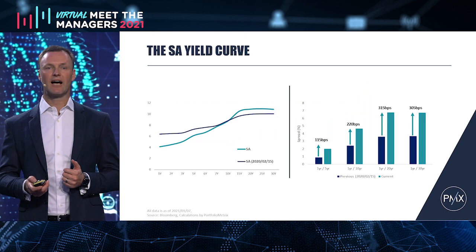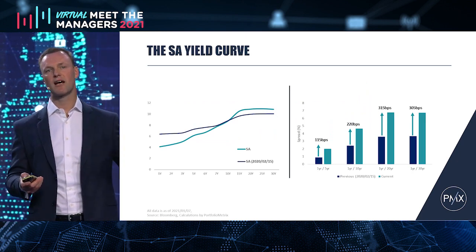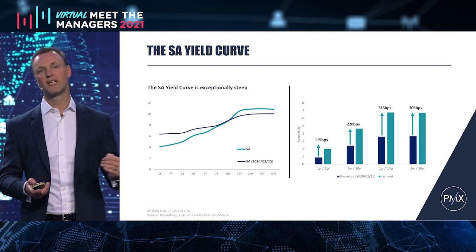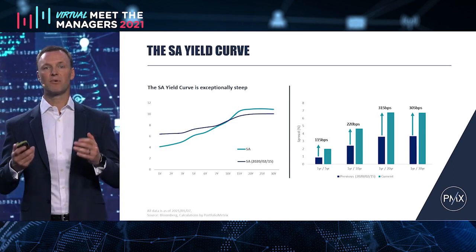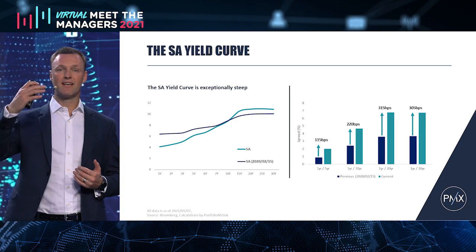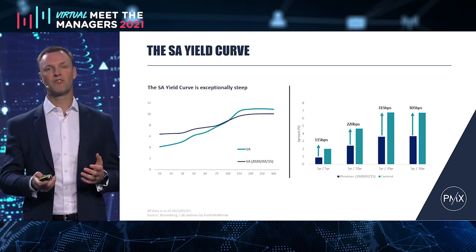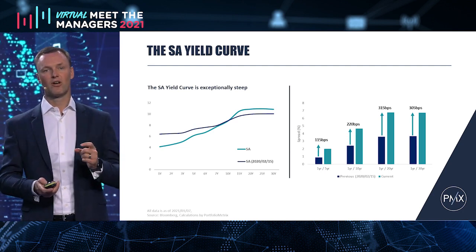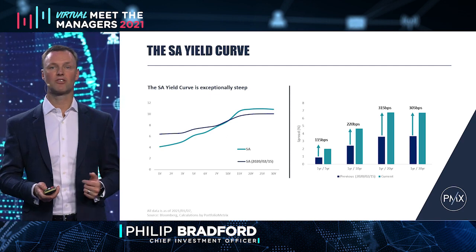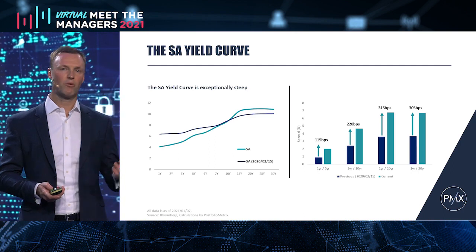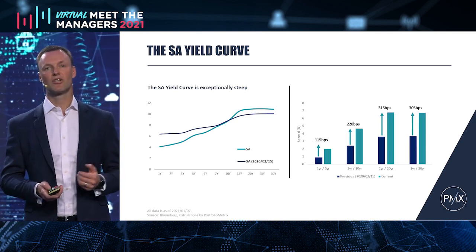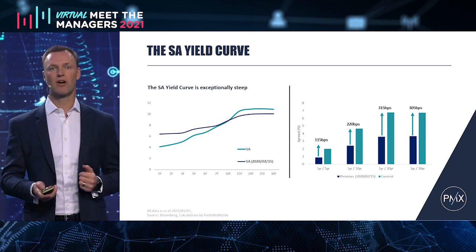Back to the yield curve — this shows how rates looked a year ago in the dark line. Before the coronavirus, you were getting just over 6% for one-year deposits, and the longer dates were giving just under 10%. Post the initial coronavirus outbreak, we've cut interest rates aggressively, so short-dated rates are lower. But in the turquoise line, you can see the longer-dated rates are even higher. My observation is that our long-dated bonds in South Africa are probably the only risky asset class I can find that is cheaper now than it was just as the coronavirus was breaking out — equity markets, property markets, even our currency are stronger than they were then. So that's the one asset class that hasn't recovered yet, which again creates an interesting opportunity.